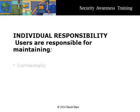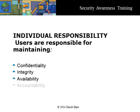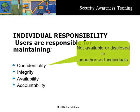When you use an information system at work, you are responsible for maintaining confidentiality, integrity, availability, and accountability. Confidentiality measures ensure information is not made available or disclosed to unauthorized individuals, entities, or processes.